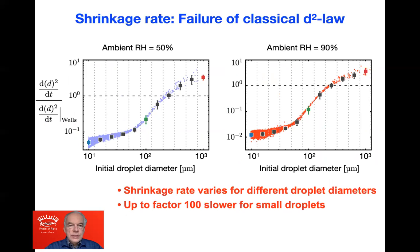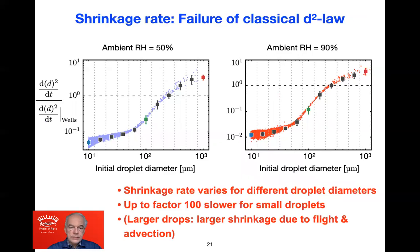The same physics is expressed in terms of shrinking rate. Comparing the droplet shrinking rate to the Wells shrinking rate, we see that shrinking is strongly delayed — by a factor of 50 for moderate relative ambient humidity, and by a factor of 100 for high relative humidity of 90%. The larger droplets, in fact, shrink faster because they fly: a convective effect prevents the boundary layer from building up, so their shrinking rate is higher.